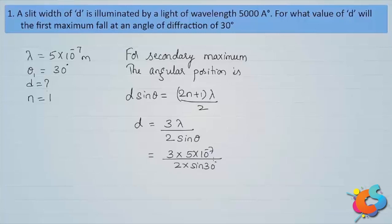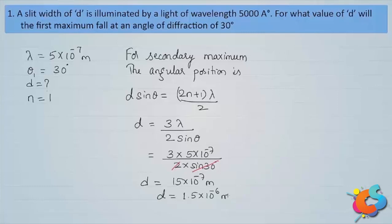Sin 30° is one-half, which cancels with the 2 in the denominator. The numerator gives 15×10⁻⁷, so d = 15×10⁻⁷ meter, which can also be written as 1.5×10⁻⁶ meter, or 1.5 micrometers.